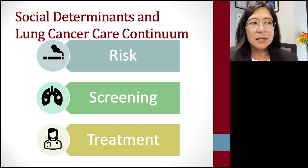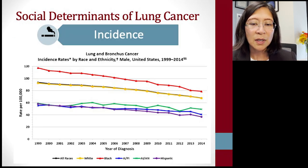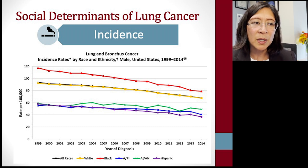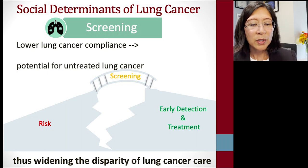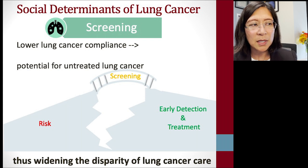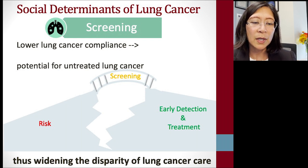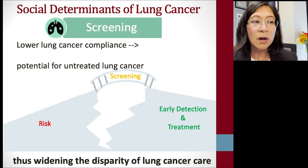In a previous talk we discussed social determinants of lung cancer care in terms of risk, screening, early detection, and treatment. We know that the incidence of lung cancer is higher among African Americans and Black Americans compared to other races. There are also factors such as biology, family history, and environmental exposure to radon and asbestos that are disproportionately impacting underserved communities, raising their overall risk of lung cancer.